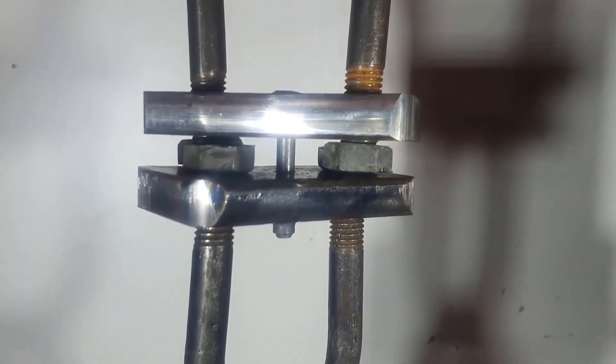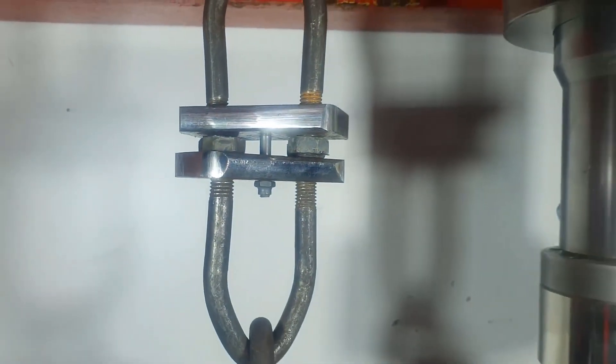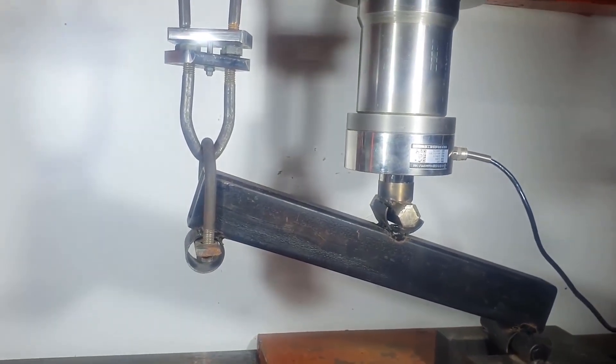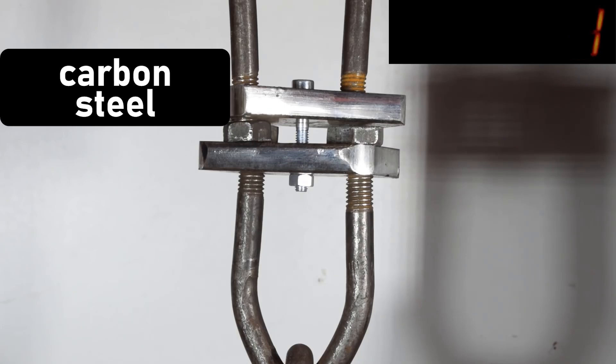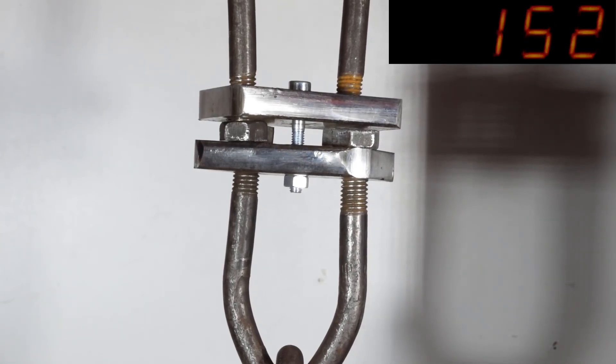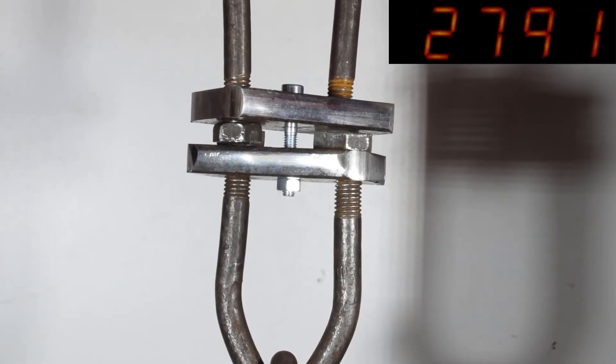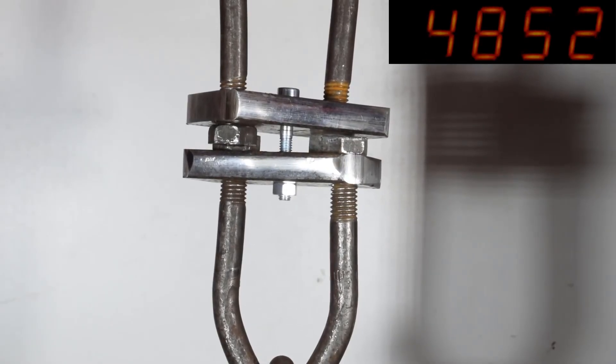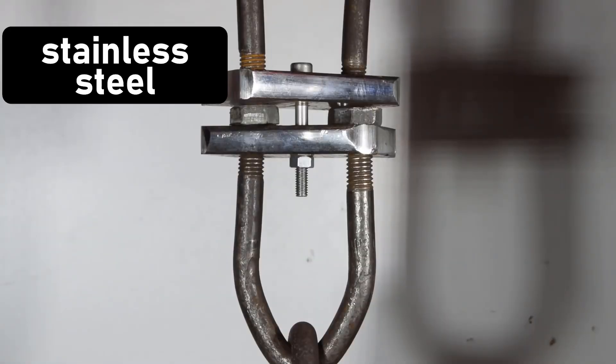And the most important thing, when we press down on the middle part of the lever with the press, the actual load that the bolt will experience, according to the lever rule, will be half of the load shown on the display. So first up is the bolt made of carbon steel. The carbon steel bolt withstood a tensile load of 2.5 tons.